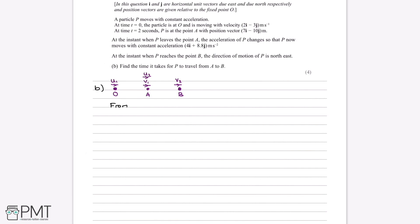Writing out the SUVAT variables from O to A: displacement is 7i minus 10j, initial velocity is 2i minus 3j, the final velocity V is what we want to find, the acceleration as a vector is three-halves i minus 2j from Part A, and the time is 2 seconds since the journey is from t equals 0 to t equals 2. We can pick any SUVAT equation containing V.